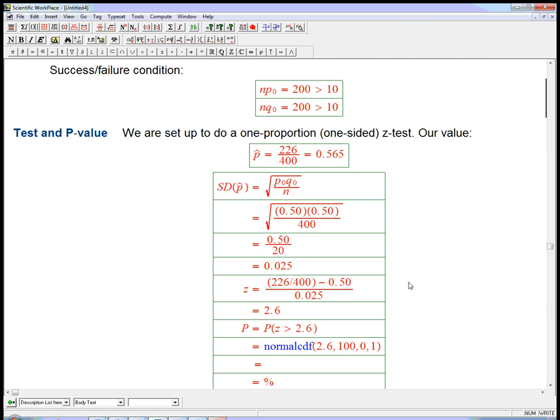We're set up to do a one proportion, one-sided z-test. Our value is 226 over 400, 56.5% or 0.565. We do the standard deviation of the sampling percentage, assuming the null hypothesis. The p₀ and q₀ are both one-half, n is 400. This turns out to be SD(p̂) = √(0.5×0.5/400) = 0.50/20 = 0.025.